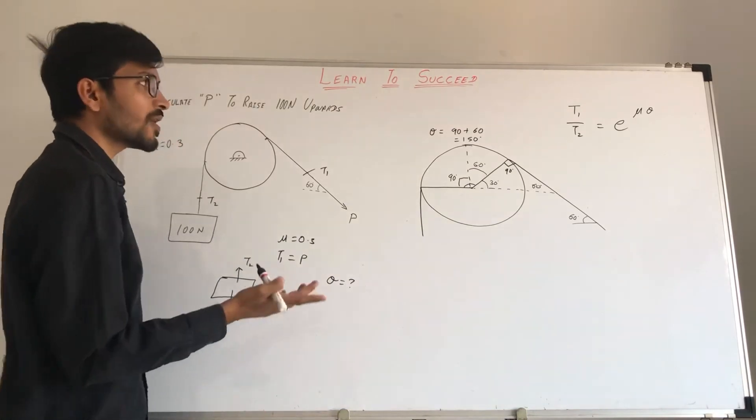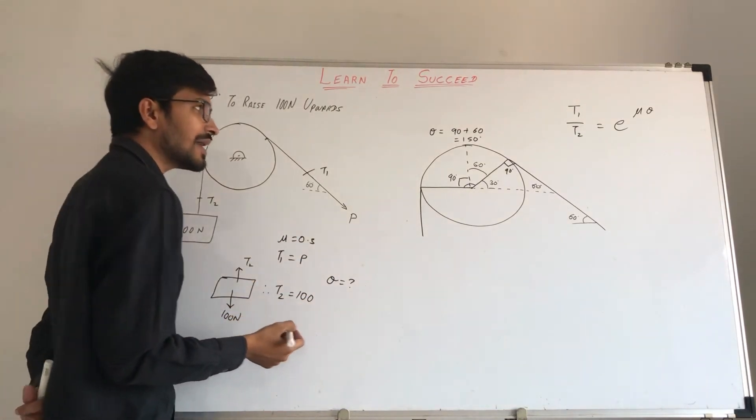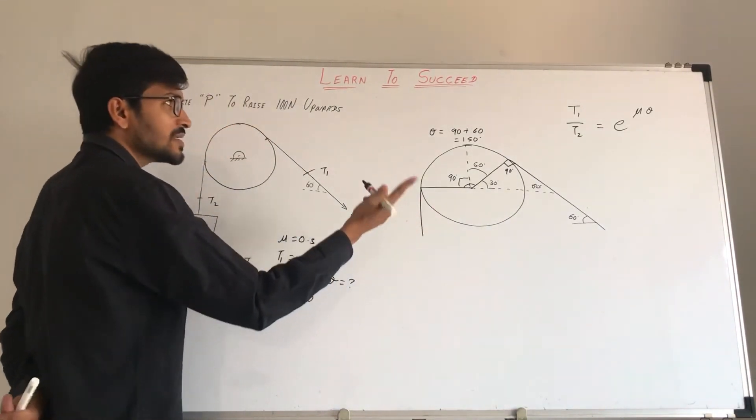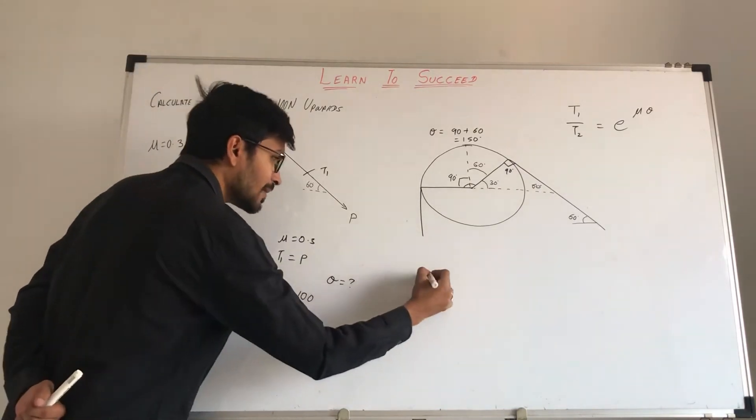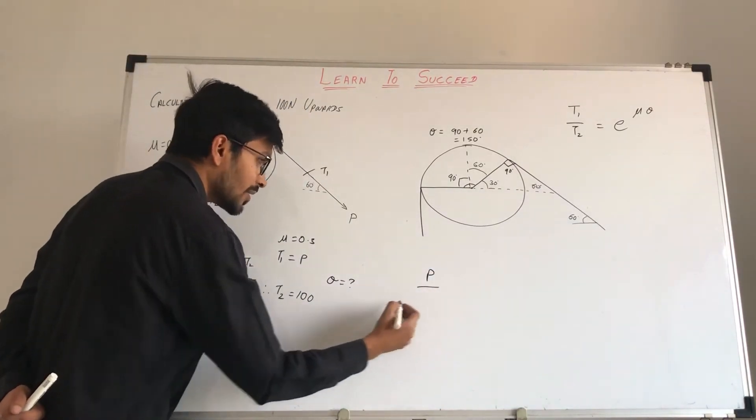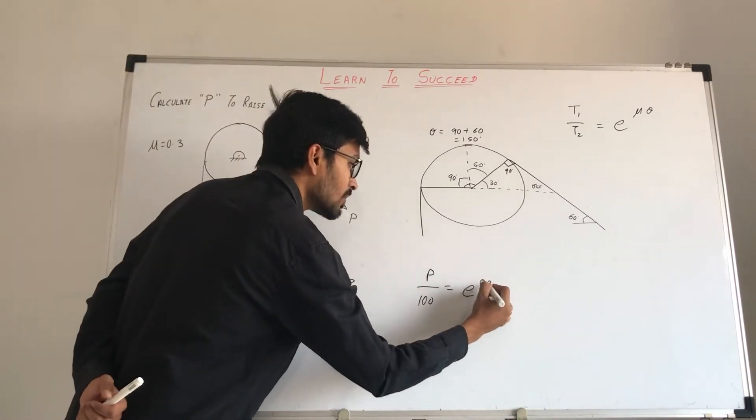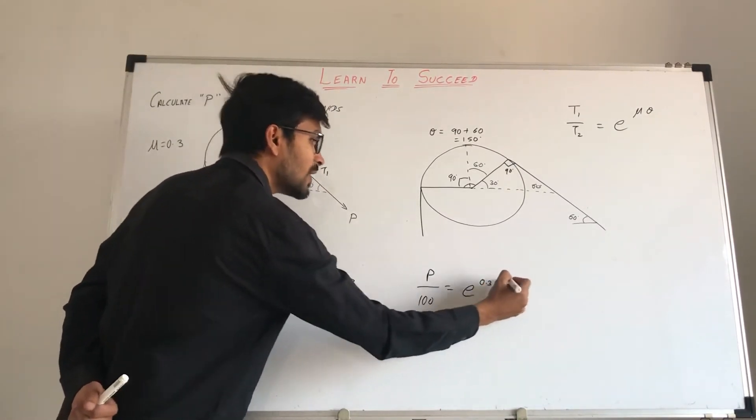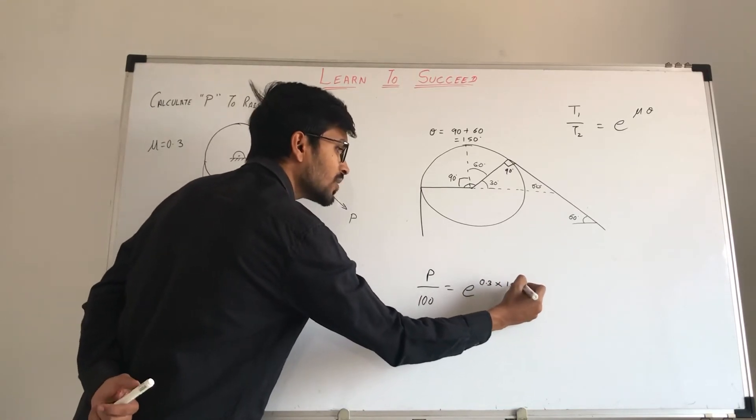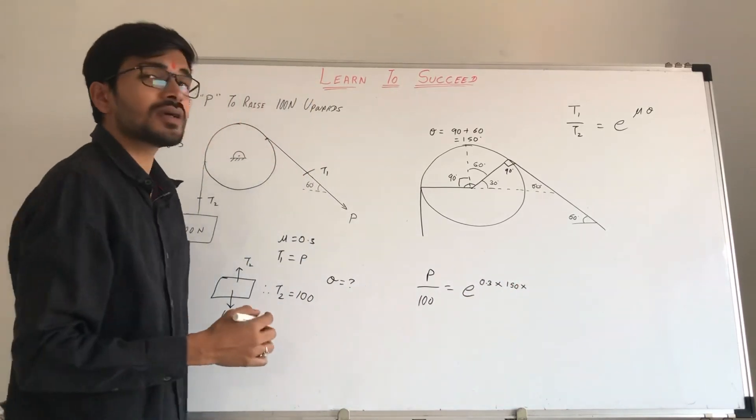Now if we put these values in our formula, we will get our final answer. So T1 by T2 is equal to e raised to mu theta. T1 value is P, by T2 is 100, equals to e raised to mu. Mu is 0.3 into theta. Theta is 150 degrees.